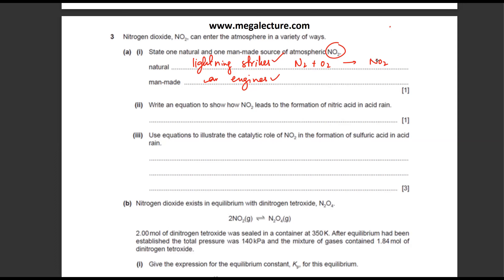State and write the equation to show how NO2 leads to the formation of nitric acid. Simply, NO2 mixes with water and produces two acids: nitric acid as well as nitrous acid.